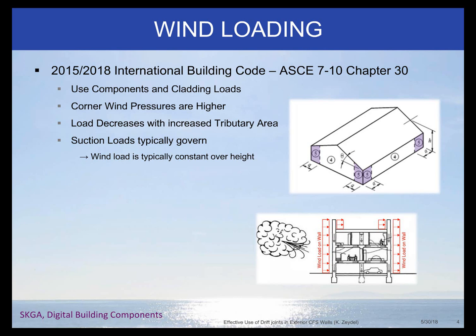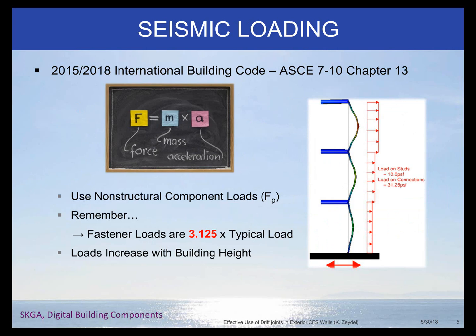That's something to be careful of as you're running your numbers. In general, suction loads — the wind suction loads — govern over the pressure side loads. Wind load is typically constant over the height, meaning the wind load you design your first story walls for is the same as your top story. For parapet loading, you're getting pressure or suction on the main side and also the backside, so your loads get pretty high. For seismic loading, ASCE 7-10 Chapter 13 covers non-structural component loads, the F-sub-P loads. They increase with height, so the higher up you are on the building, the higher the forces. Also, fastener-level loads for exterior walls are higher because your R-sub-P value is one, and your a-sub-P value is different too, so fastener-level loads on connectors are higher than on wall framing.